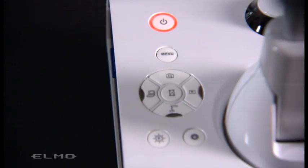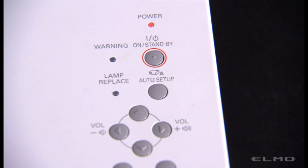Power the document camera on by pressing here. You'll see the light turn from red to blue. You'll also turn your projector on.